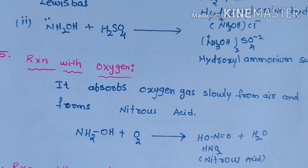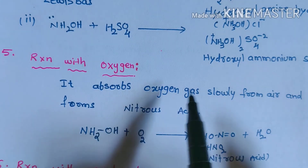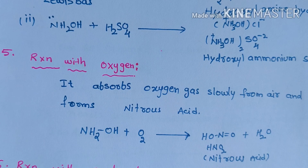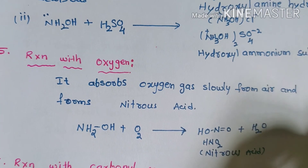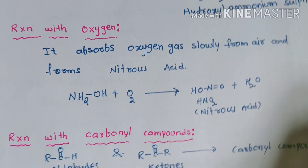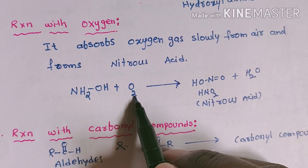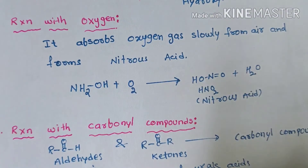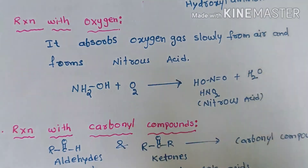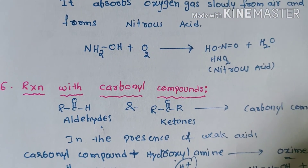Hydroxylamine also reacts with oxygen gas. It slowly absorbs oxygen present in the air and converts into nitrous acid (HNO₂). This is a simple reaction to balance: NH₂OH + O₂ → HNO₂ + H₂O. There are three oxygen atoms on each side, so no coefficient is needed in front of hydroxylamine or oxygen.